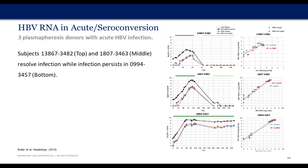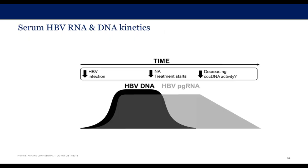These findings allowed us to redraw the schematic, showing that RNA is present from the acute phase at a very consistent level relative to DNA, then DNA drops when nucleoside analog treatment is initiated, RNA remains constant, and then decreases over time when a patient is on treatment.